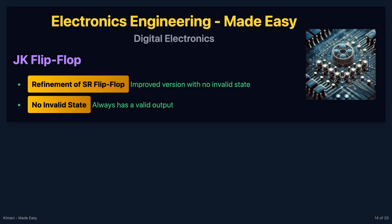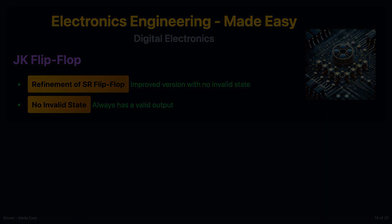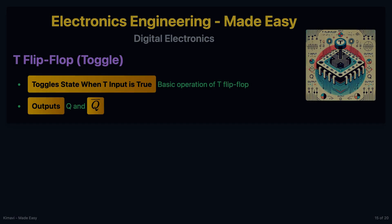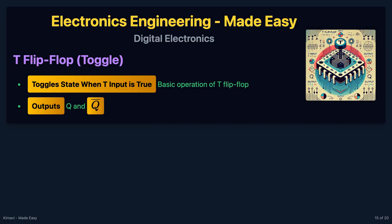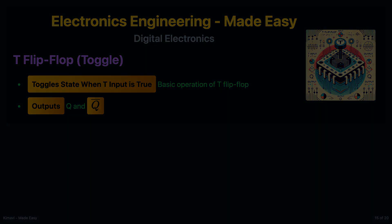The JK flip-flop is a refinement of the SR flip-flop. The J and K inputs behave like set and reset, but with no invalid state. The T flip-flop toggles its state when the T input is true, with outputs Q and its complement.